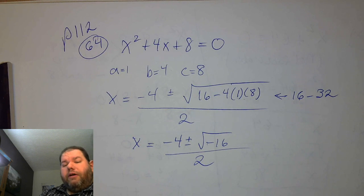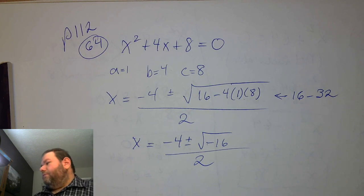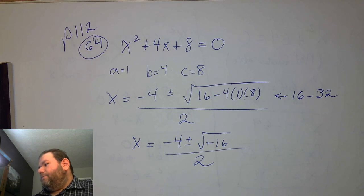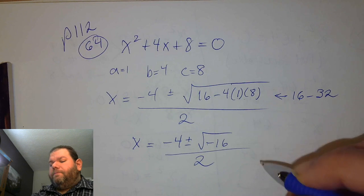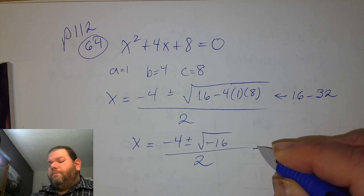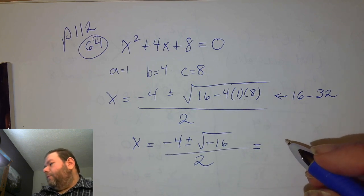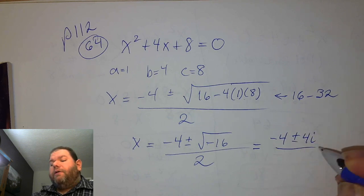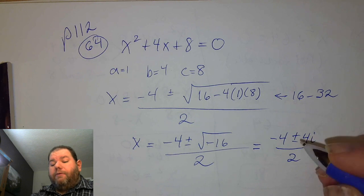What is the square root of negative 16? It's 4i. So we have negative 4, plus or minus 4i, divided by 2.